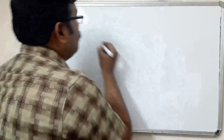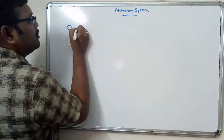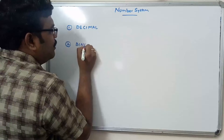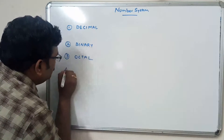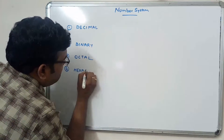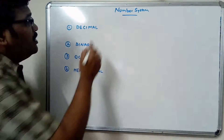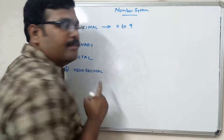In our computer memory, numbers will be represented in different formats. Our computer memory mainly supports four representations: decimal, binary, octal, and hexadecimal.